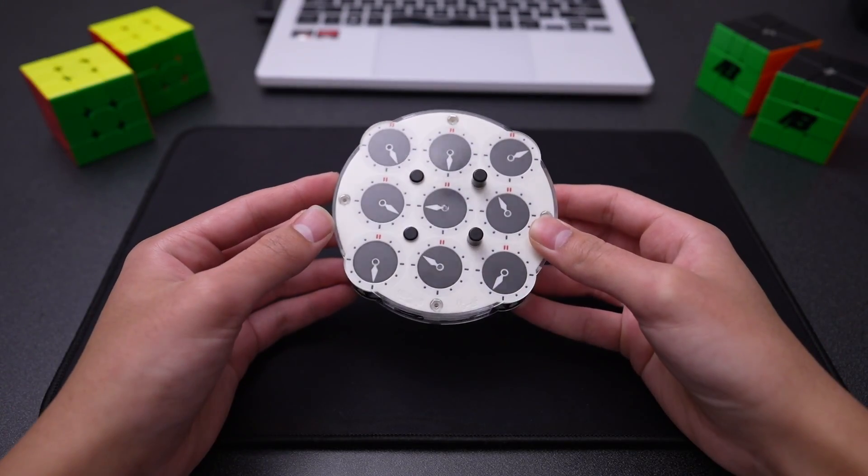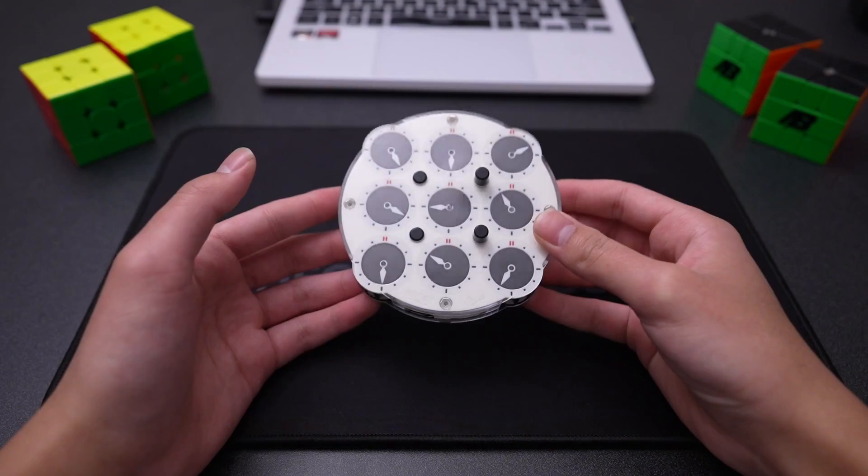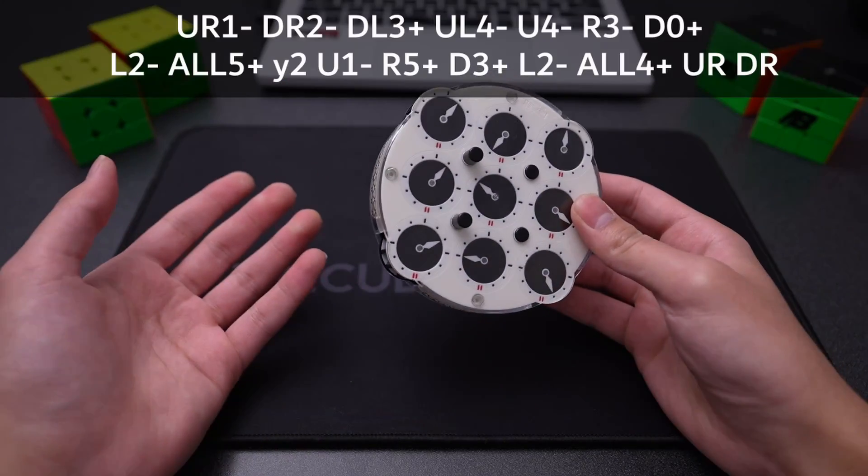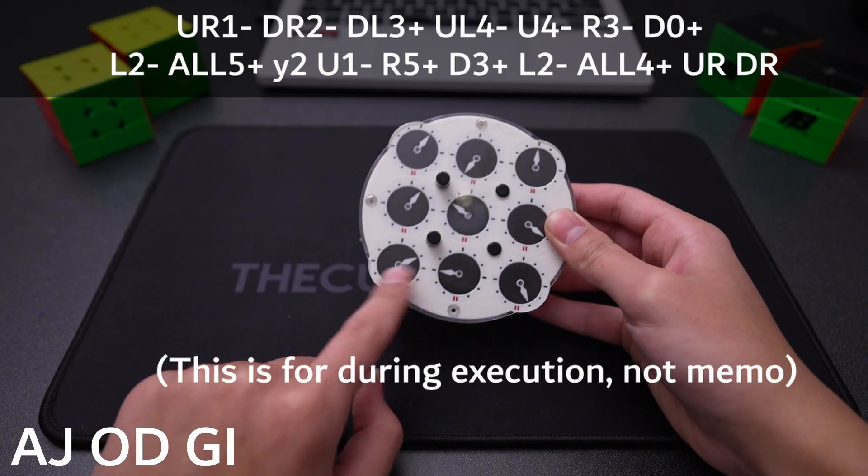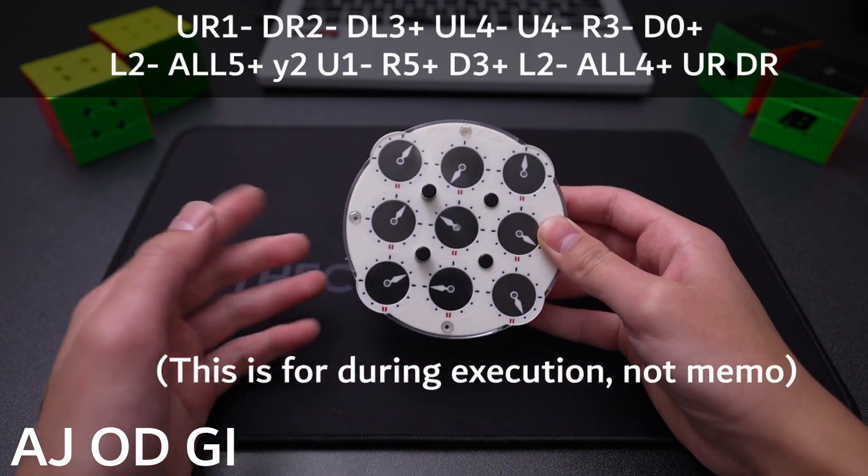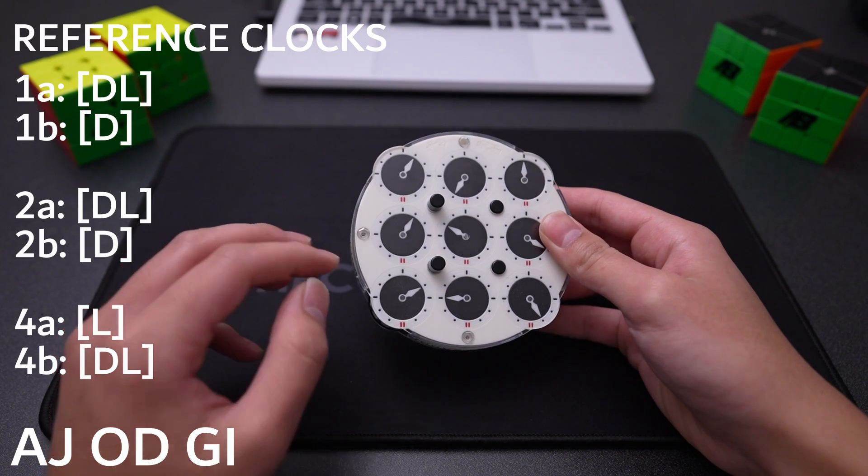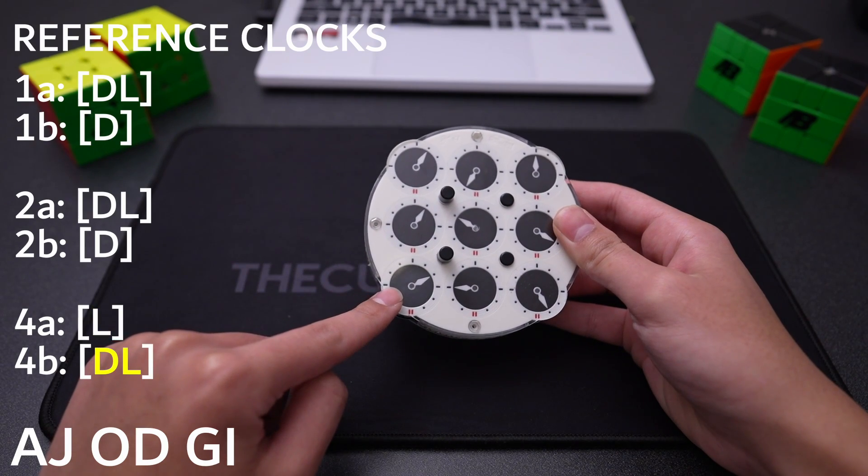With Oxford Memo, the execution is exactly the same as normal, except instead of memorizing the moves, you memorize where certain clocks will be after doing the move. For the first two moves, we always look at DL for the left hand and D for the right hand. These are called our reference clocks, and they change only on the fourth move, which is a slash move, where they change to L for the left hand and DL for the right hand.